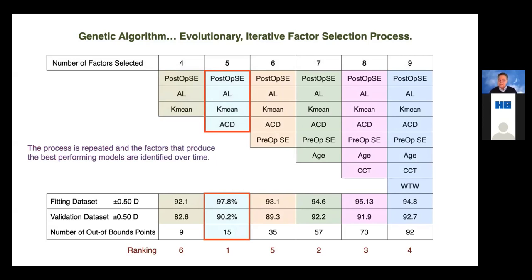We identify which factors are most important. The axial length, central corneal power, and anterior chamber depth are key. We also found that the refractive outcome for a given IOL power turned out to be very important. After going through all 13 factors extensively, we found that axial length, central corneal power, anterior chamber depth, the refractive outcome, and the given IOL power were really what we needed — and we could fit this data set to almost 98% accuracy. We also held out 20% of the cases and ran them through; these were cases naive to the process, and that accuracy was at 90%. That told us we were on the right track and moving in the right direction.